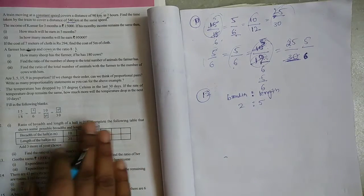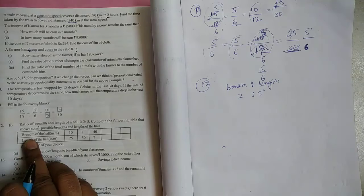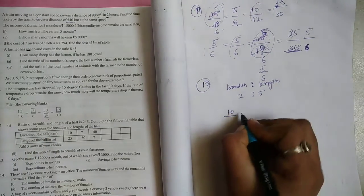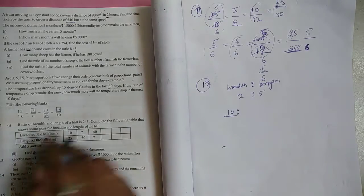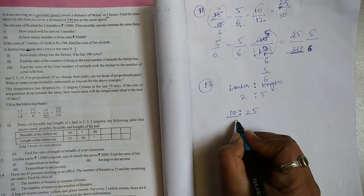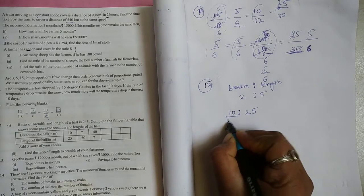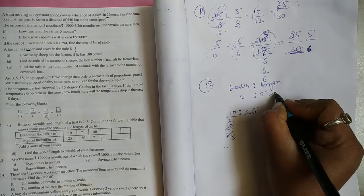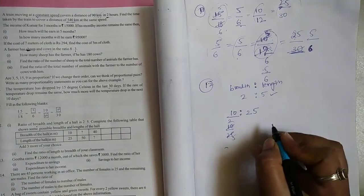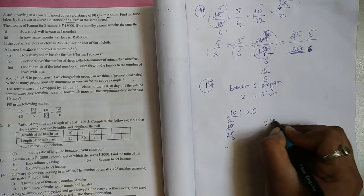Complete the following table. Breadth of the hall is 10, length of the hall is 25. We simplify: 10 by 25 simplifies to 2 is to 5. So the ratio remains 2 is to 5.